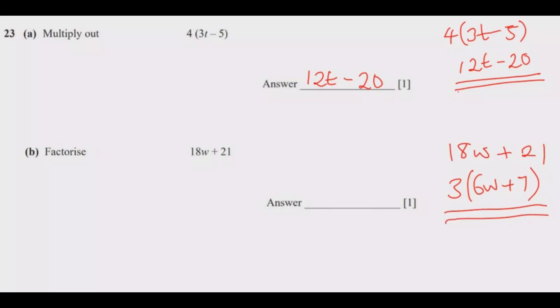So, basically, when we factorize, 18w plus 21 will give us 3, open bracket, 6w plus 7, close bracket. That way, we have factorized.